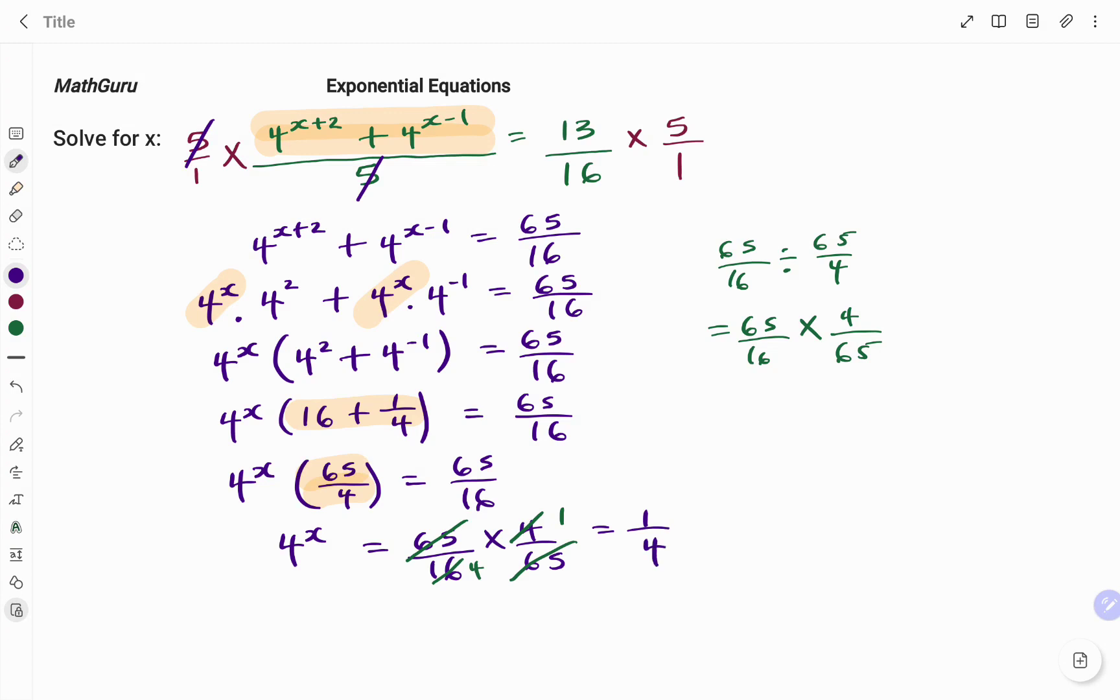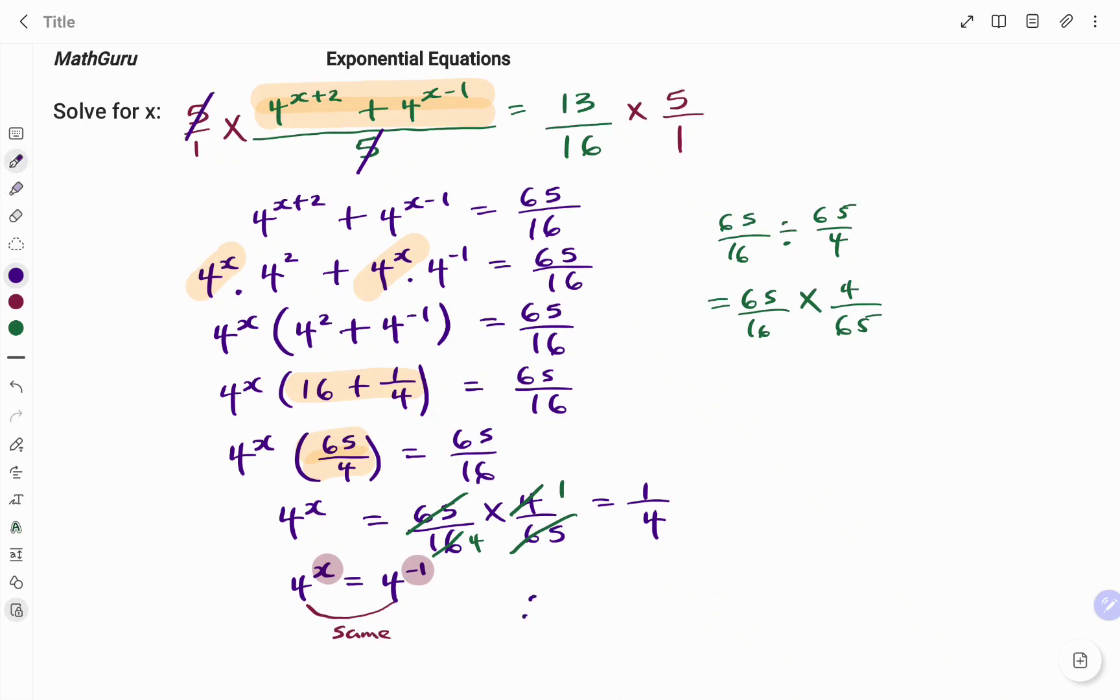And if I write it in exponential form, I have 4 to the power of x equals 4 to the power of negative 1. And once the bases are the same, all I need to do is to equate the powers as shown. So therefore, the value of x equals negative 1.